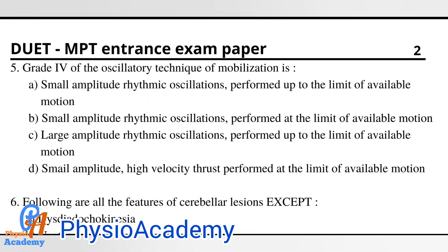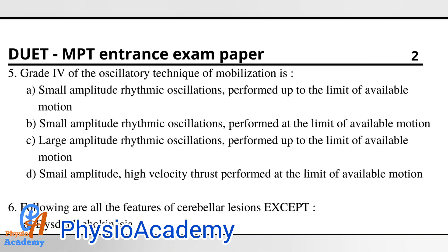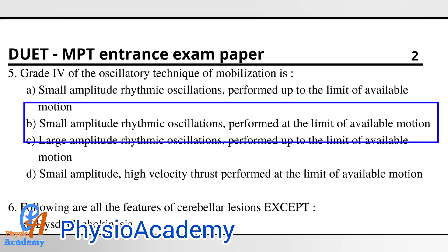Question number five: grade 4 of the oscillatory technique of mobilization is option A: small amplitude rhythmic oscillations performed up to the limit of available motion. Option B: small amplitude rhythmic oscillations performed at the limit of the available motion. Option C: large amplitude rhythmic oscillations performed up to the limit of available motion. Option D: small amplitude higher velocity thrust performed at the limit of the available motion. The correct answer is option B: small amplitude rhythmic oscillations performed at the limit of available motion.